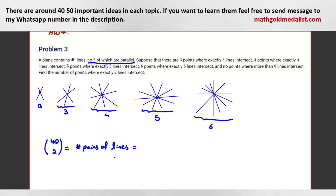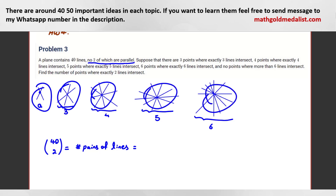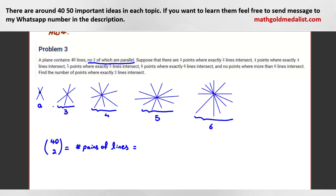That's why we call it double counting — we want to use these assumptions to find another formula for that same quantity, and then we can find 'a'.